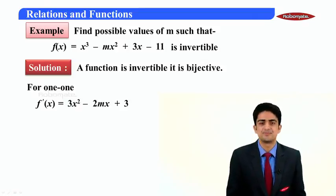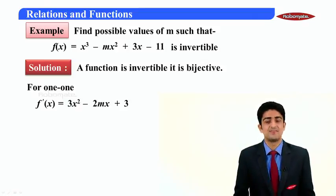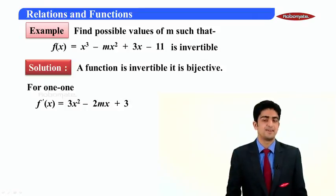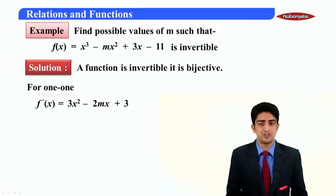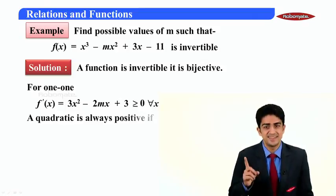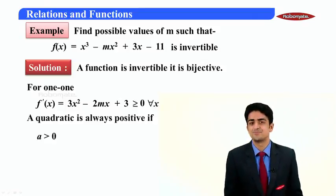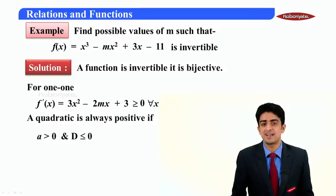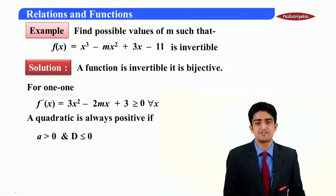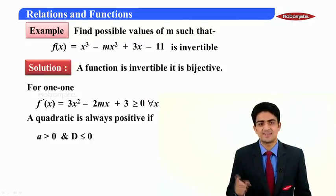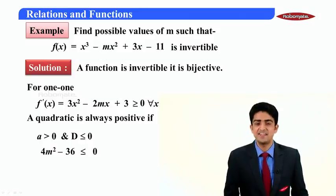It's a quadratic with a positive. We can make this quadratic always greater than equal to zero. We know a condition for quadratic to be always positive: a is already positive, taking D ≤ 0.